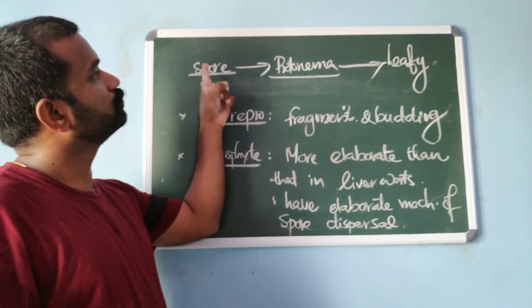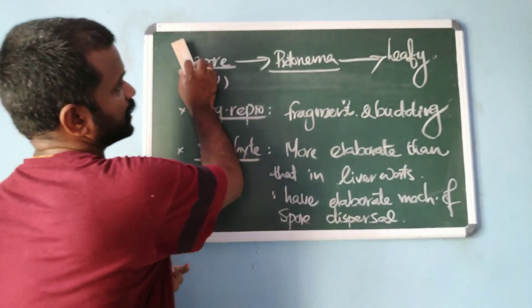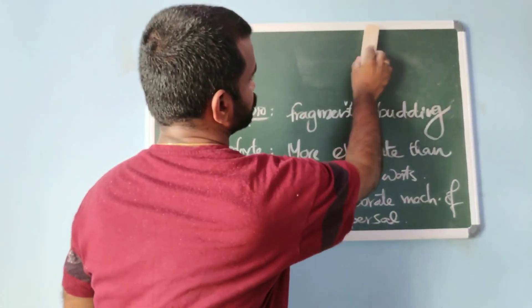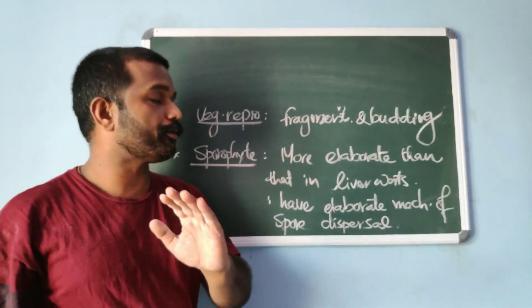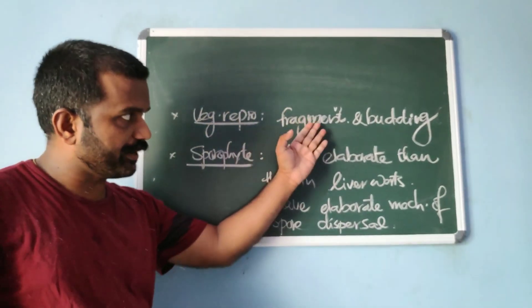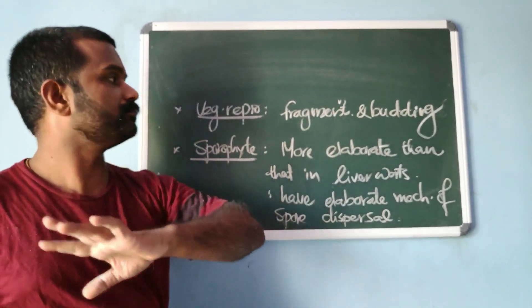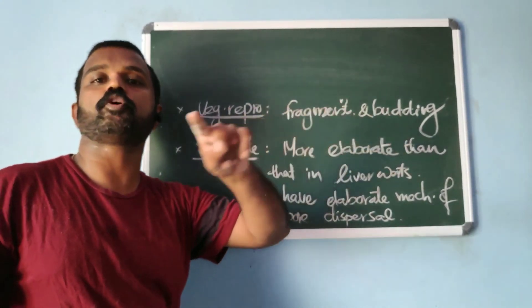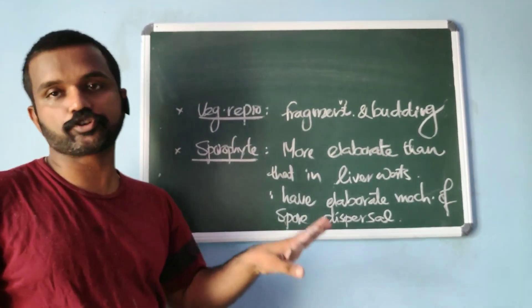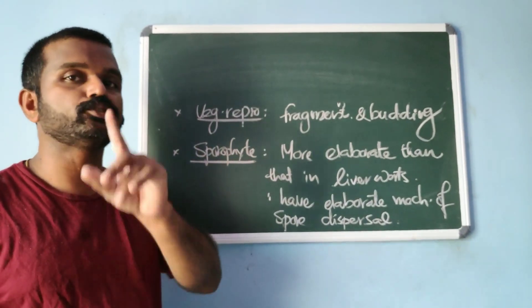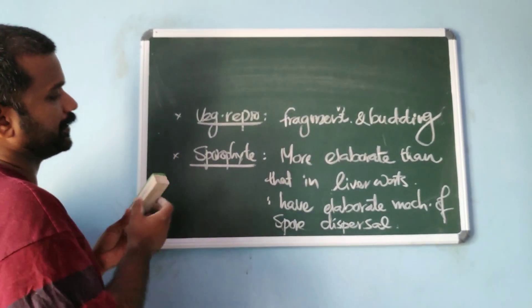Those are the two stages: protonema stage and leafy stage. Regarding vegetative reproduction in mosses, it occurs through fragmentation and budding in the protonema. Remember, the protonema is totally asexual because sex organs are present only in the leafy stage.